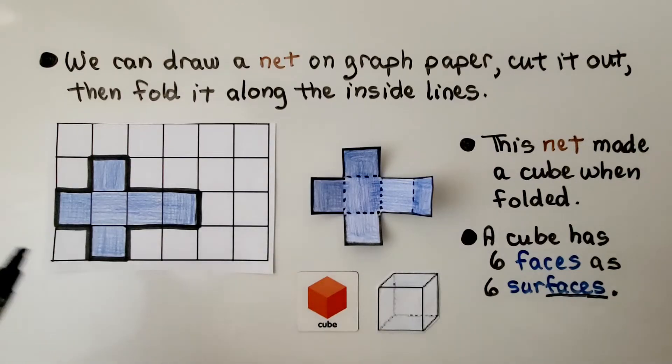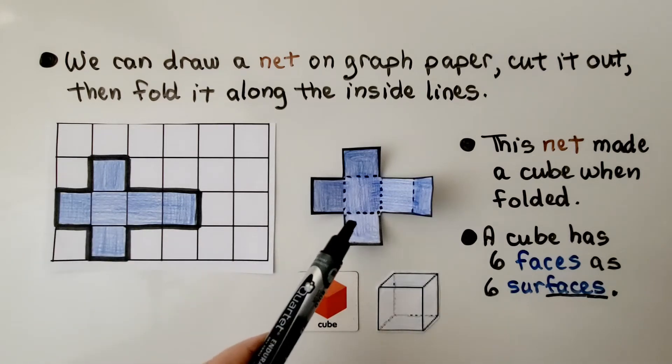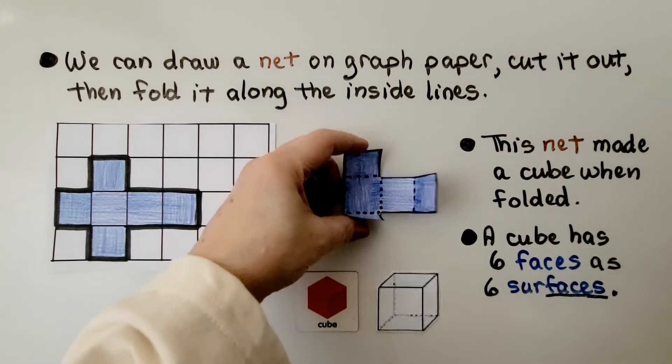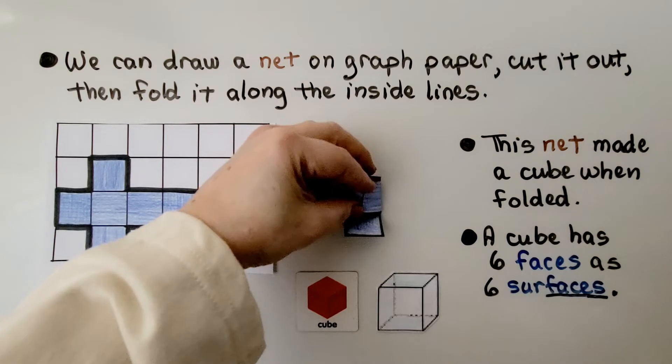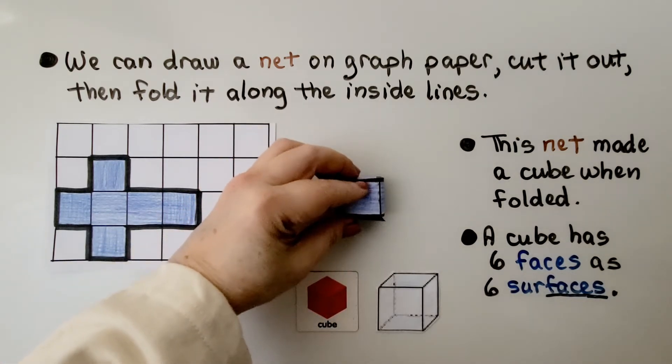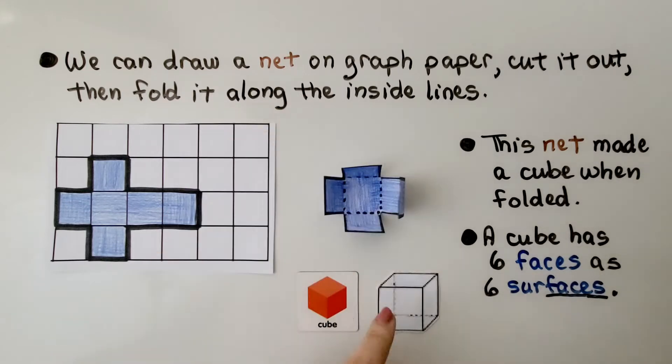We can draw a net on graph paper, cut it out, then fold it along the inside lines. If we fold this along the inside lines, we'll make a cube. It's kind of hard to do with one hand, but we'll make a little cube just like this.